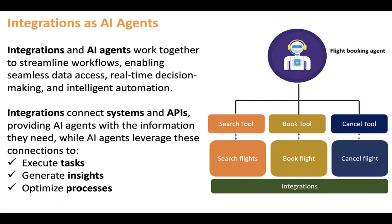Once you select a flight, the AI agent calls the book tool to book it. If your tickets are already booked and you say 'I want to cancel this and book another one,' the cancel tool is called first, and then the search tool is called to find another flight. This is how the AI agenting framework works in the context of integration.